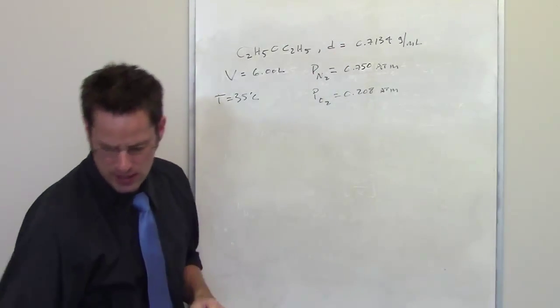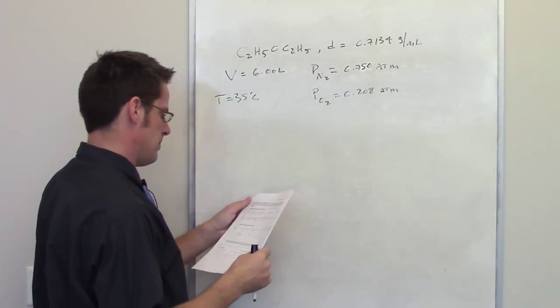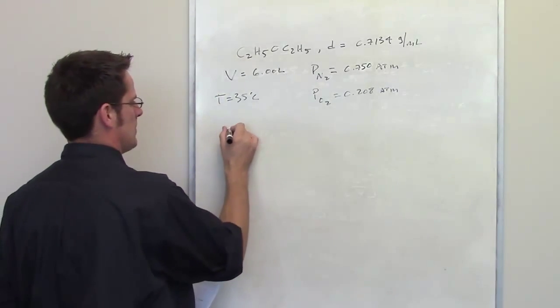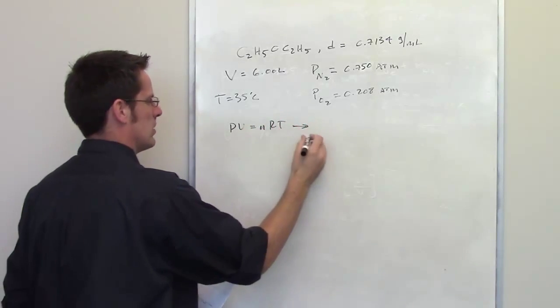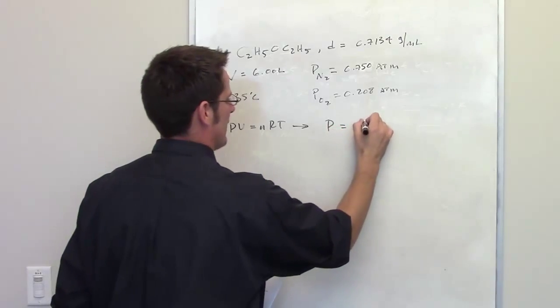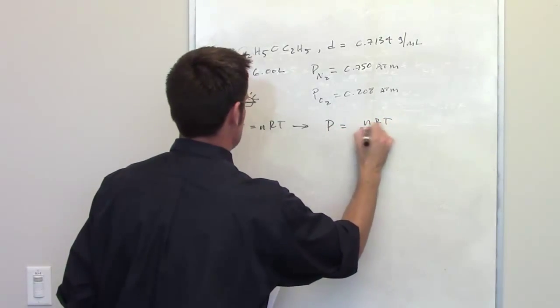We're then asked to calculate first of all in part A the partial pressure of diethyl ether. Using the PV equals NRT equation you should know or recognize that pressure of any gas is going to be equal to NRT divided by V.